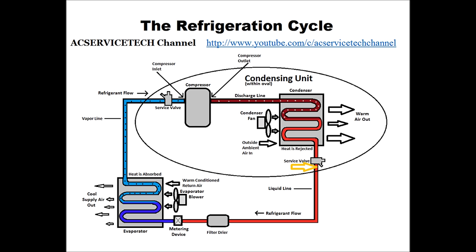That is called subcooling — the temperature decrease in liquid form. It continues to go through the refrigerant line until it goes through the filter dryer, which absorbs any moisture in the refrigeration system, and then it hits the metering device where there's a pressure drop. It drops from high pressure, high temperature liquid refrigerant to a low pressure, low temperature 80% liquid, 20% flash gas, but mainly liquid.